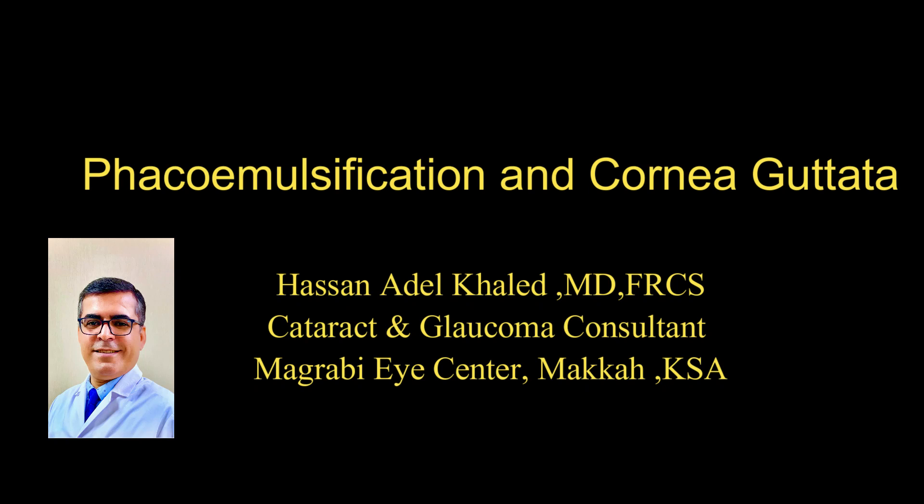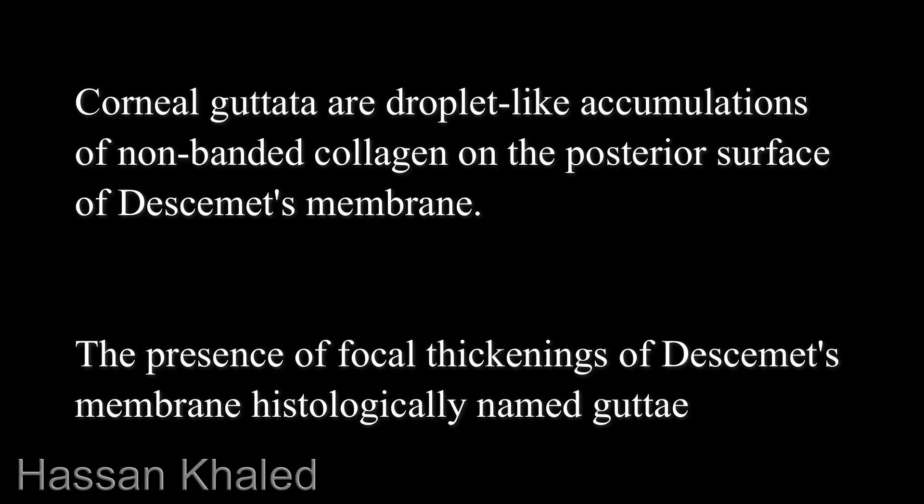Hello. Phacoemulsification and corneal gutata. Corneal gutata are droplet-like accumulations of non-banded collagen on the posterior surface of Descemet's membrane — the presence of focal thickening of Descemet's membrane, histologically named guta.